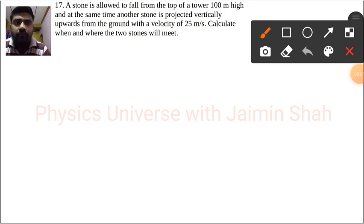A stone is allowed to fall from the top of a tower 100 meters high, and at the same time another stone is projected vertically upwards from the ground with a velocity of 25 meters per second. Calculate when and where the two stones will meet.